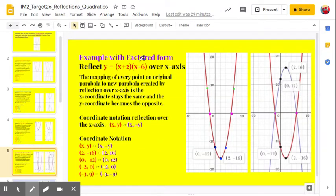In this example we have factored form for the quadratic, so it's y equals x plus 2 times x minus 6. That is our red parabola here, and we're going to reflect it over the x-axis. This one's interesting because the parabola is both above and below the x-axis. So let's take a look and see what happens.